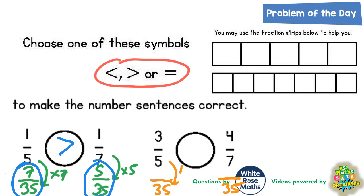To get from 5 to 35 is times 7, so 3 times 7 is 21. And to get from 7 to 35 is times 5, so 4 times 5 is 20.